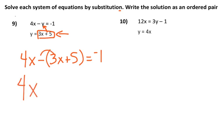So I'm going to have 4x. I'm going to subtract the 3x, and here's where a lot of you missed it, is right here. You have to subtract the 5 also. So 4x take away 3x is x minus 5 equals negative 1.